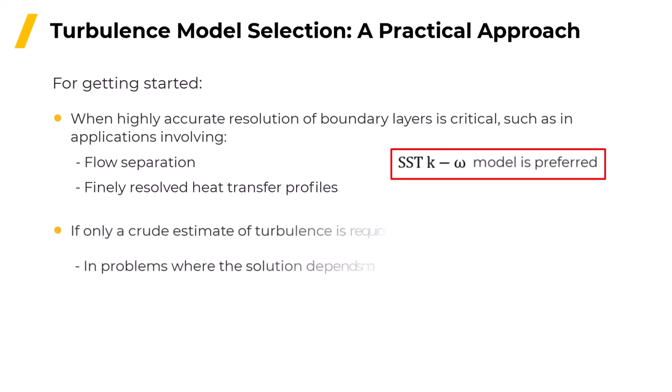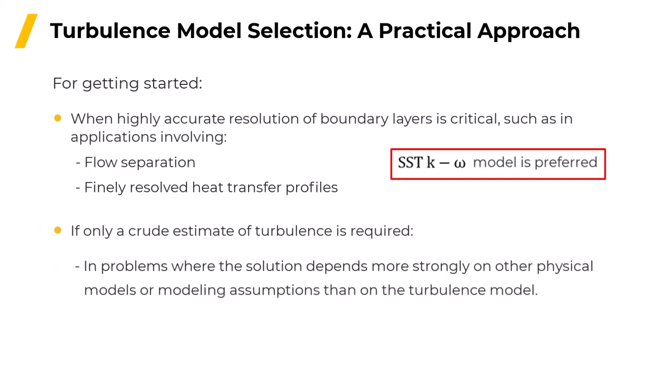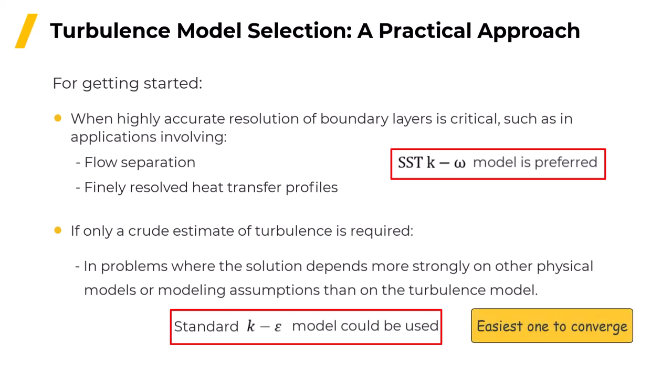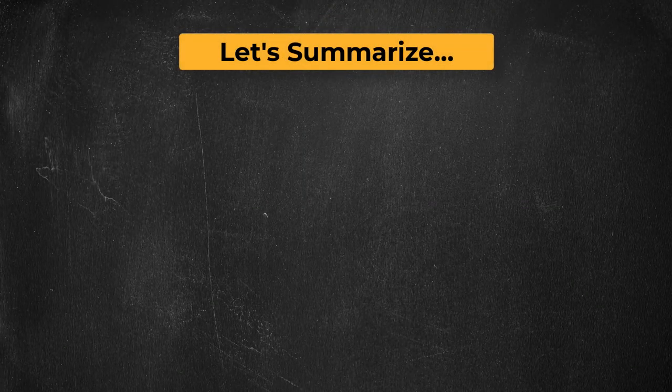There is one corollary to this recommendation. There can be problems, for instance, certain kinds of multiphase problems where the solution depends much more strongly on other physical models or modeling assumptions such that only a crude estimation of turbulence is needed. In such a case, the standard k-epsilon model could be used because it's normally the easiest one to converge. Of course, this only applies to some cases, but it can be helpful to remember that sometimes the turbulence model is not the biggest assumption being made in a CFD simulation.